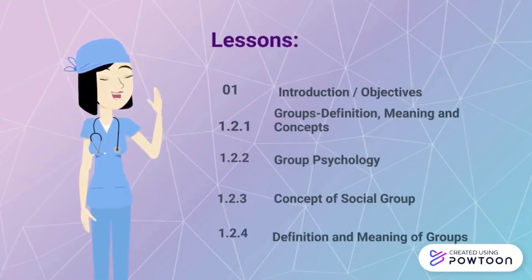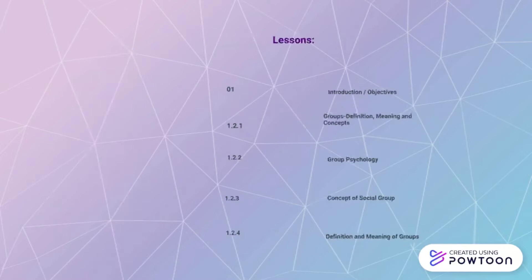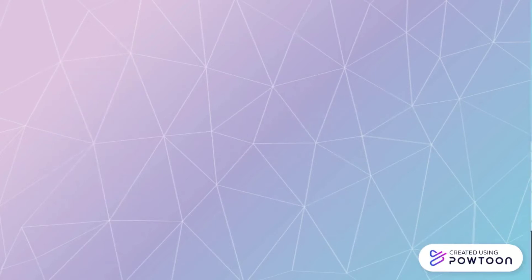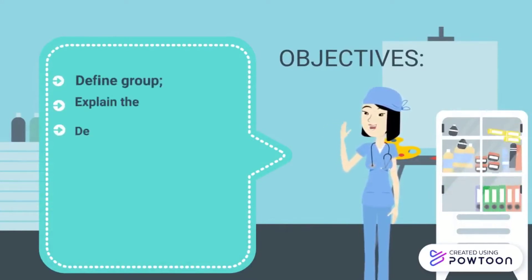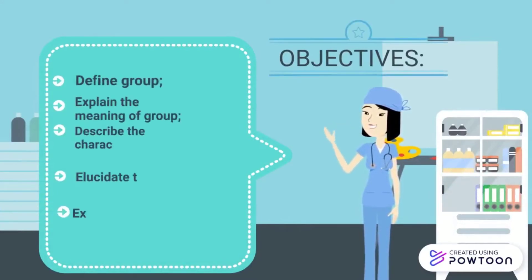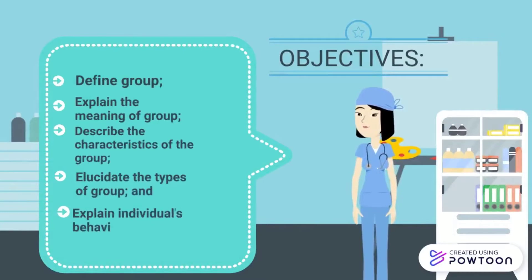The outline includes: Introduction, Objectives, Group Definition, Meaning and Concept, Group Psychology, Concept of Social Group, and Definition and Meaning of Group. The goal of this video is to define groups, explain the meaning of group, describe the characteristics of the group, clarify the types of group, and explain individual behavior in a group.